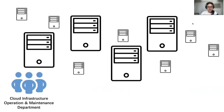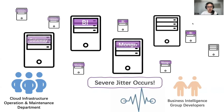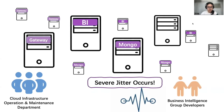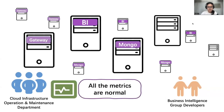Imagine you're an operations engineer in the cloud infrastructure department of an e-commerce company. One day, business intelligence developers report that their servers encounter jittering in end-to-end latency. Nothing has been discovered after their careful inspection of application logic, so naturally they blame the network's connectivity and reach out to you for help. You open the monitoring panel of all metrics, expecting several red-colored outliers, but at this time, all of them seem well-functioning.